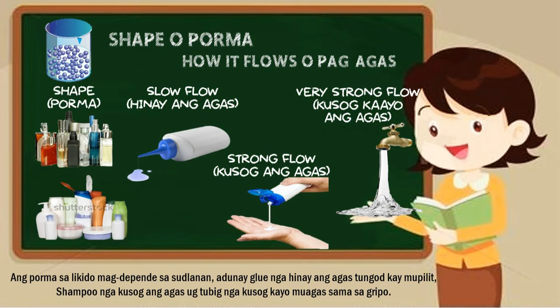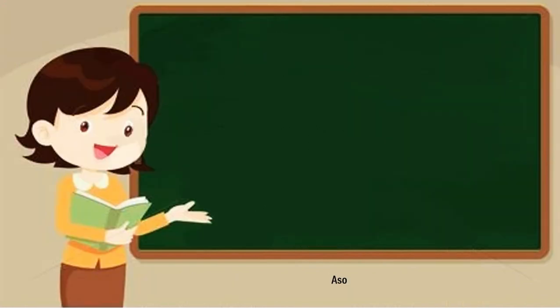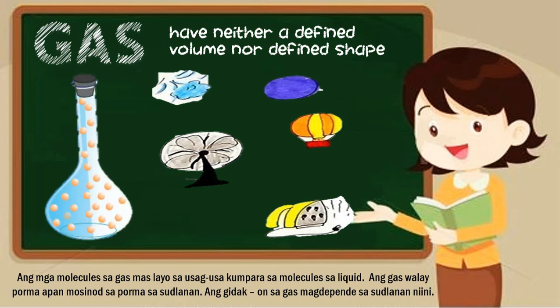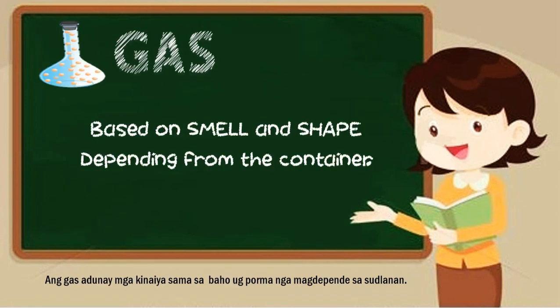Now the third state is gas. Gas has neither a definite volume nor a definite shape. Some examples include wind, a fan, a balloon, a hot air balloon, and steam. These examples produce gas or have gas inside them, like a balloon.